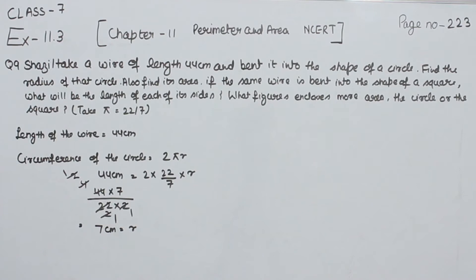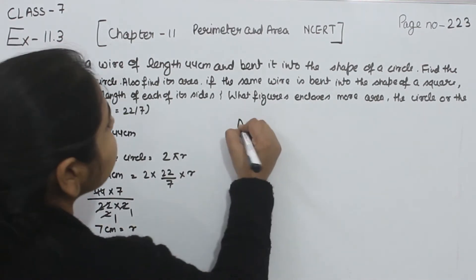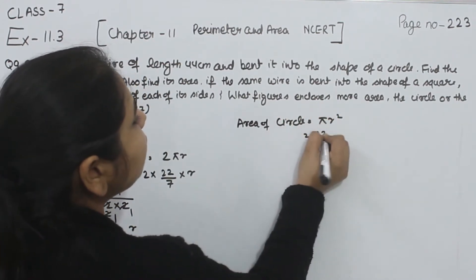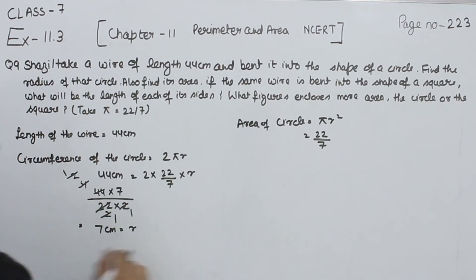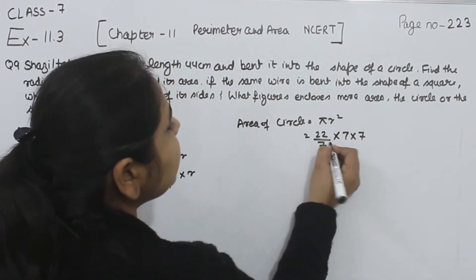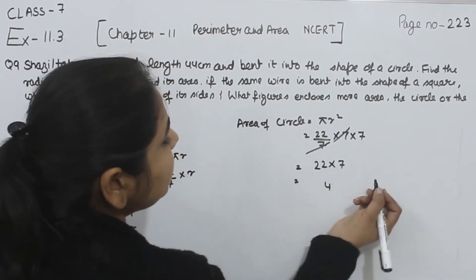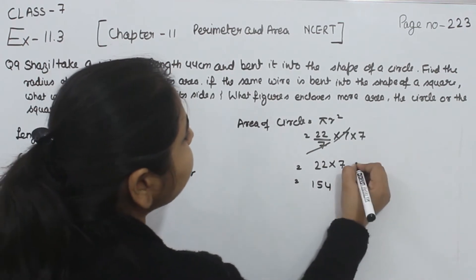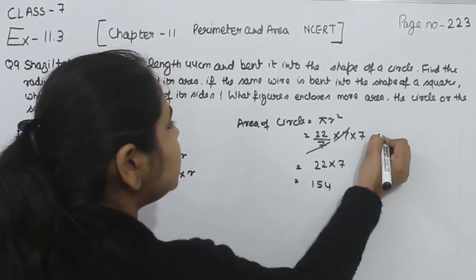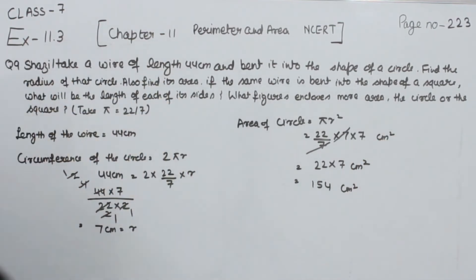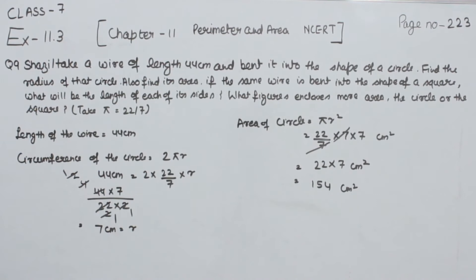Now we are knowing the radius. So we will find the area of the circle. The area of a circle is equal to πr². The value of pi is 22/7 and the radius is 7 cm. So area equals 22/7 multiplied by 7 multiplied by 7, which gives us 154 cm². Now the same wire is bent into a square.